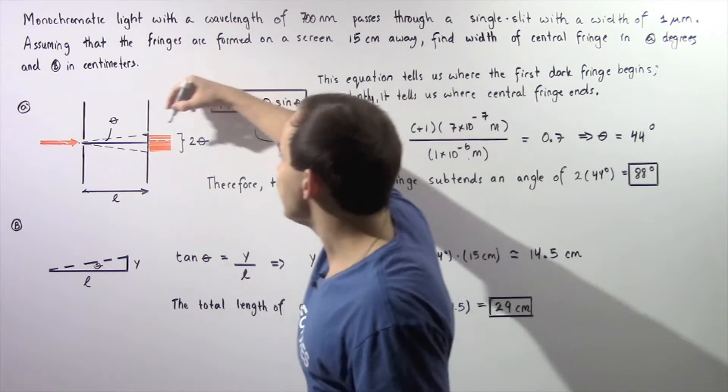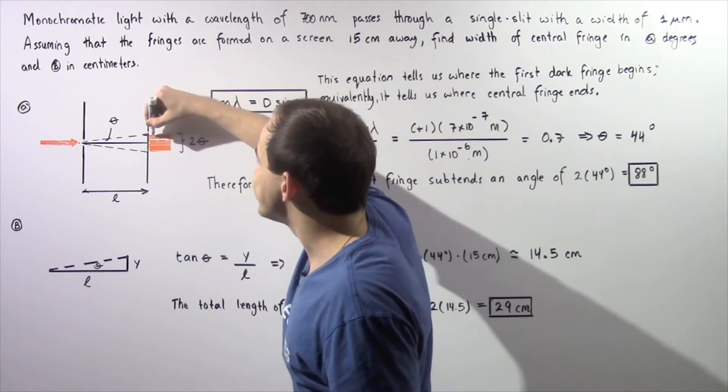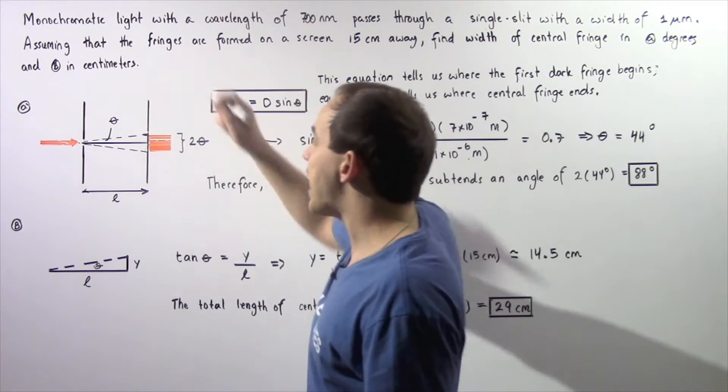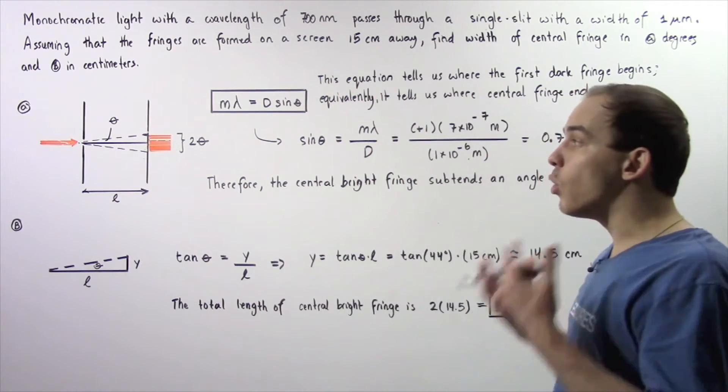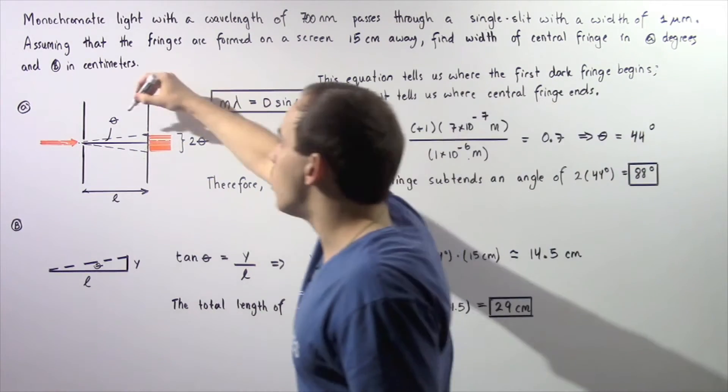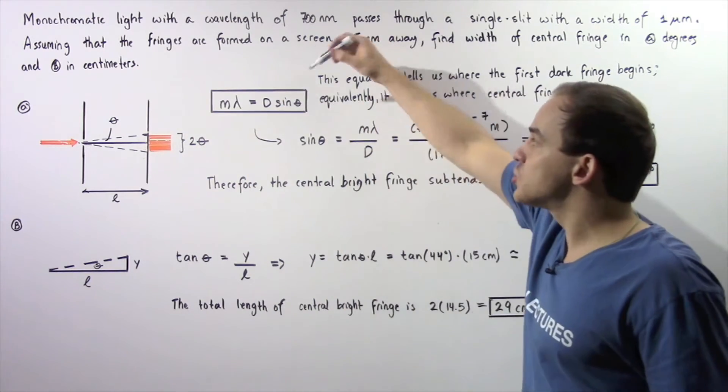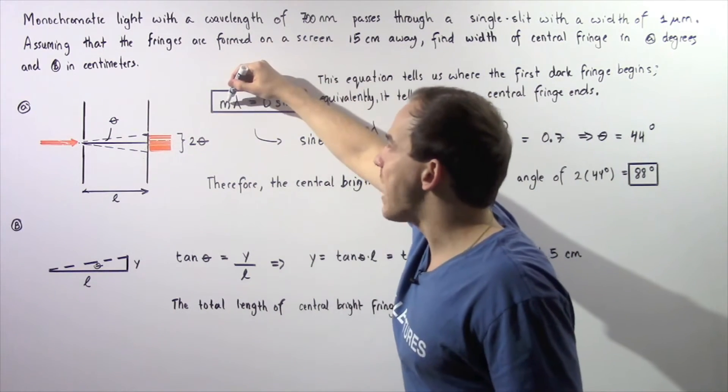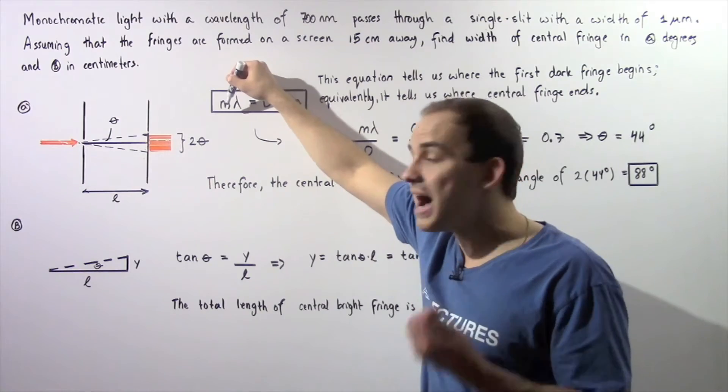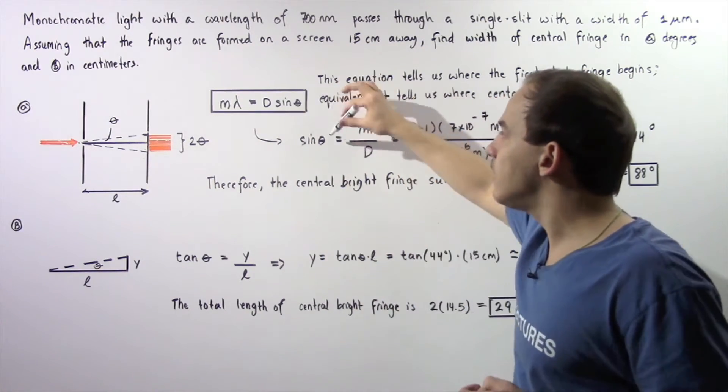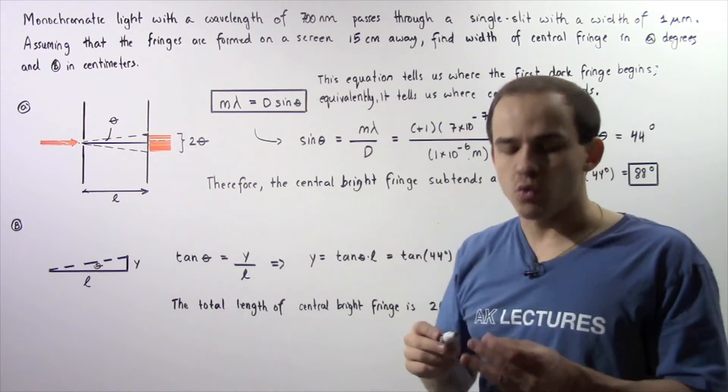It basically tells us where this section of our fringe ends and that's exactly what we want to find. We want to find this angle so as long as we assume our m is equal to positive one we can solve for the angle using this equation.